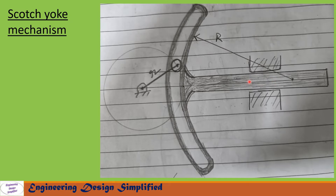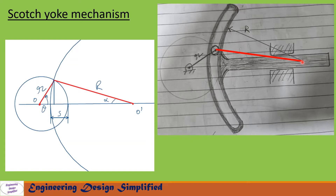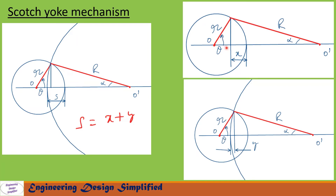Let us draw a line from the center of the roller guide to the center of the roller. This forms a triangle: this side is r, this side is R, and this side is O-O prime. As the crank rotates by an angle theta, this line will rotate clockwise by an angle alpha. The roller guide moves from its zero position to a new position. Let us call this distance s — this is the displacement of the plunger when the crank rotates by angle theta.